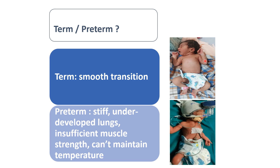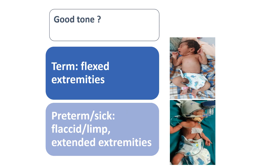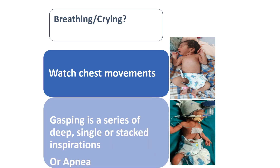Term babies have a smooth transition, while preterm babies have underdeveloped lungs, insufficient muscle strength, and cannot maintain temperature — they require resuscitation. We check tone: term babies have flexed extremities while preterm babies have poor muscle tone with extended extremities.